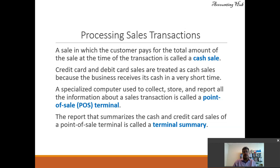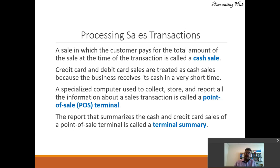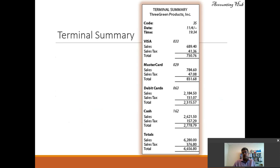This is because the business receives its cash in a very short time. That is not true in some countries, but here in the U.S. we consider them as cash. A specialized computer used to collect, store, and report all the information about a sales transaction is called a POS terminal, or point-of-sale terminal. The report that summarizes the cash and credit card sales of a point-of-sale terminal is called a terminal summary.